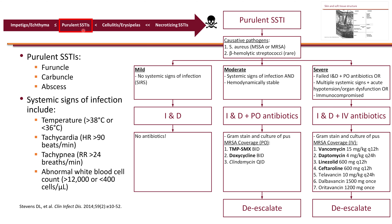Slightly more severe are purulent skin and soft tissue infections such as abscesses, carbuncles, and furuncles. Because pus is driving these infections, the large majority are caused by Staphylococcus aureus — either MSSA or MRSA. Beta-hemolytic strep such as Streptococcus pyogenes can be pus-generating, but in general they are rare, so treatments are essentially targeting Staphylococcus aureus.